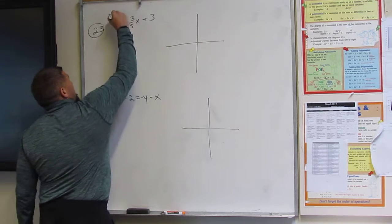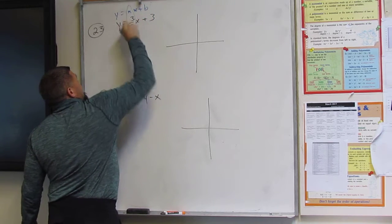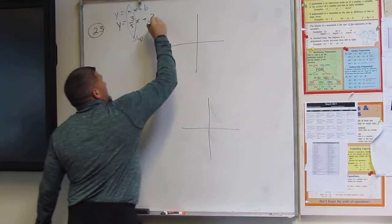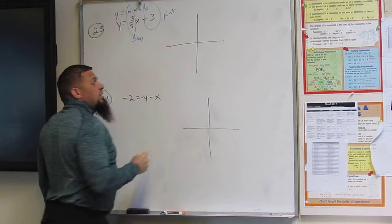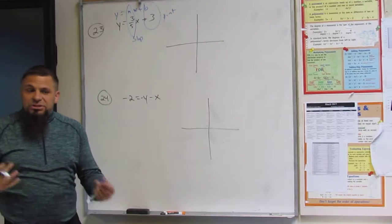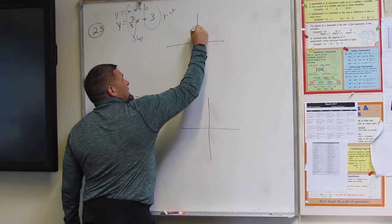The first thing I have to understand is y equals mx plus b. M is the slope, b is the y-intercept. The y-intercept is the starting point. One, two, three. That's where I start.